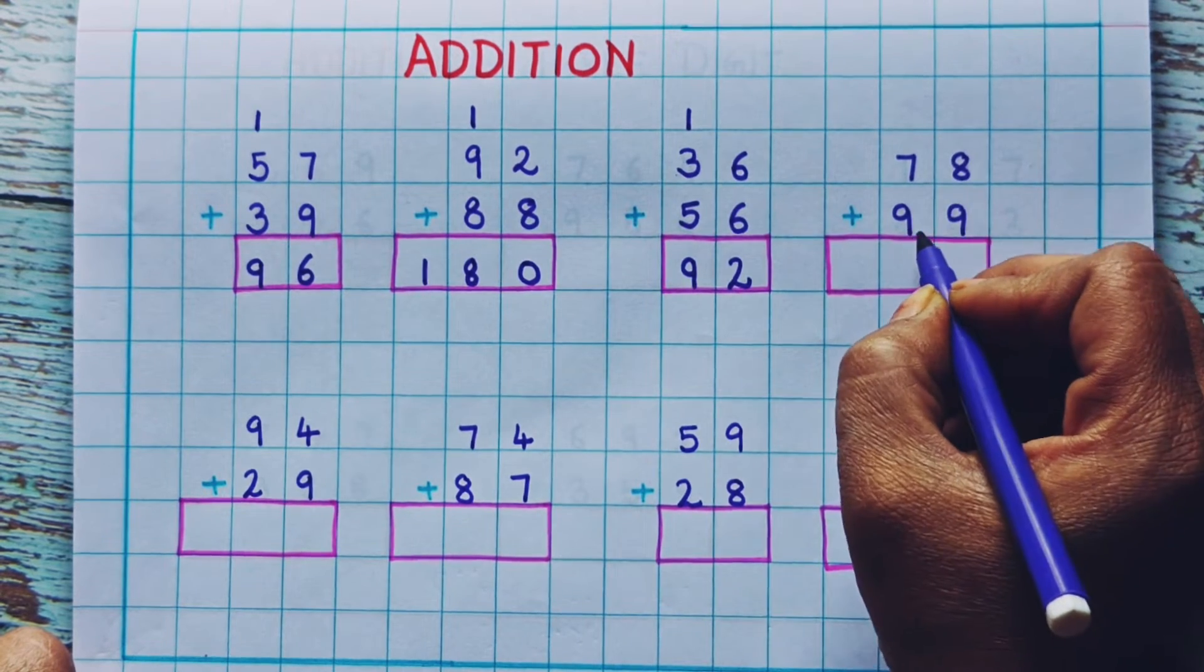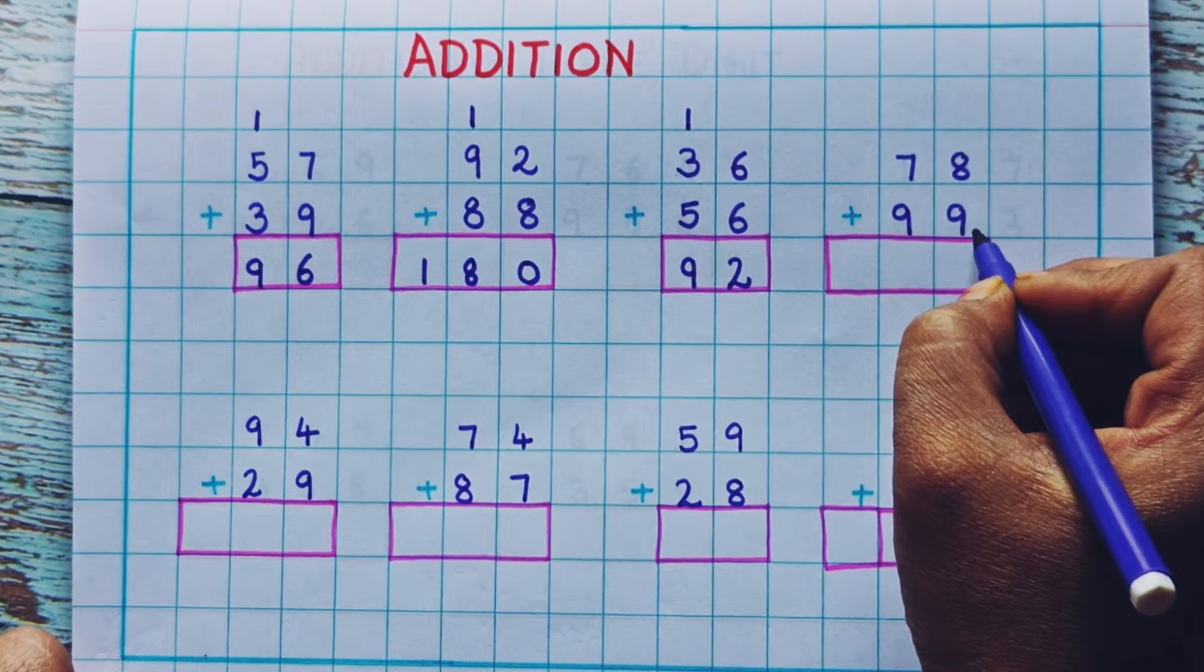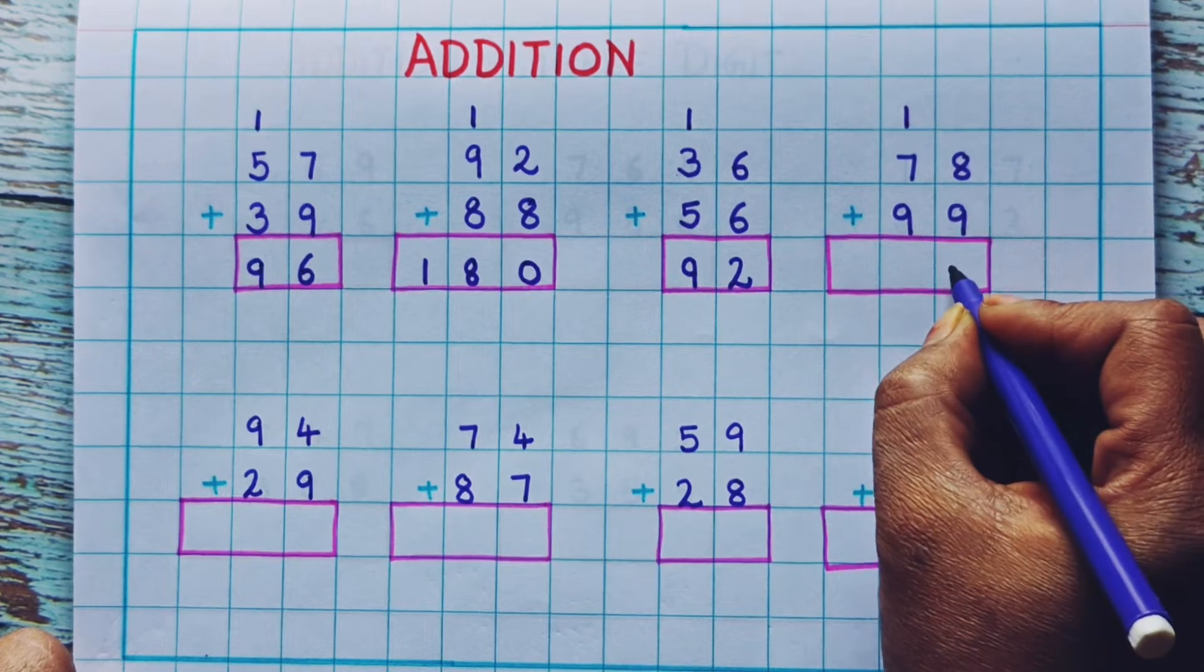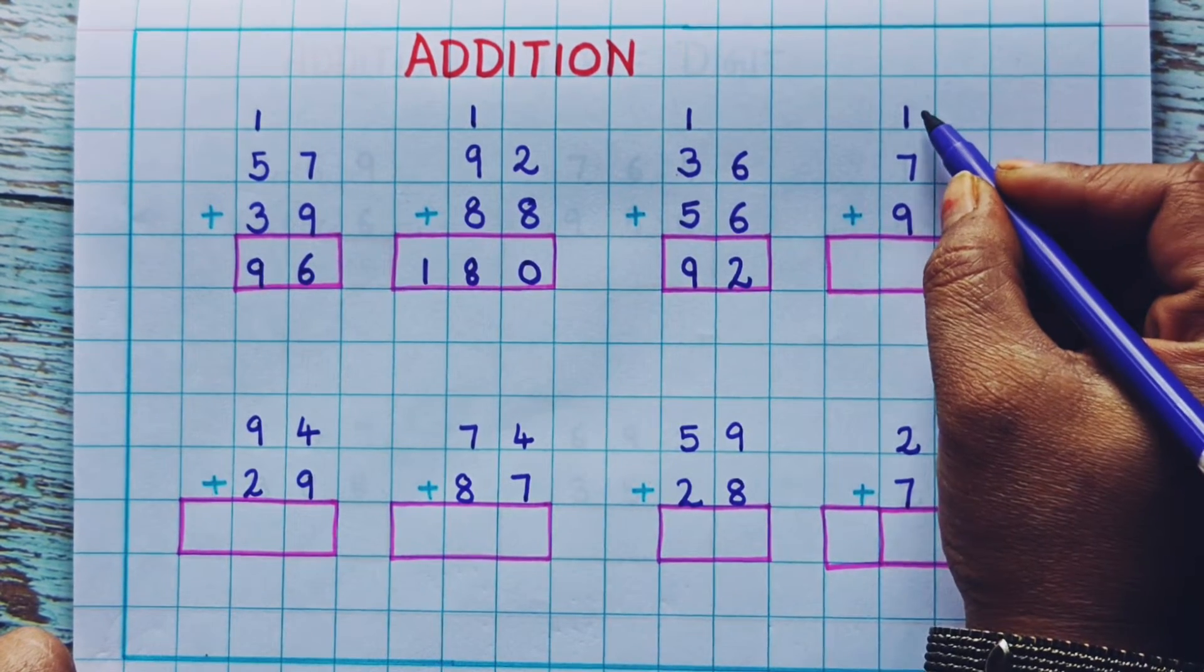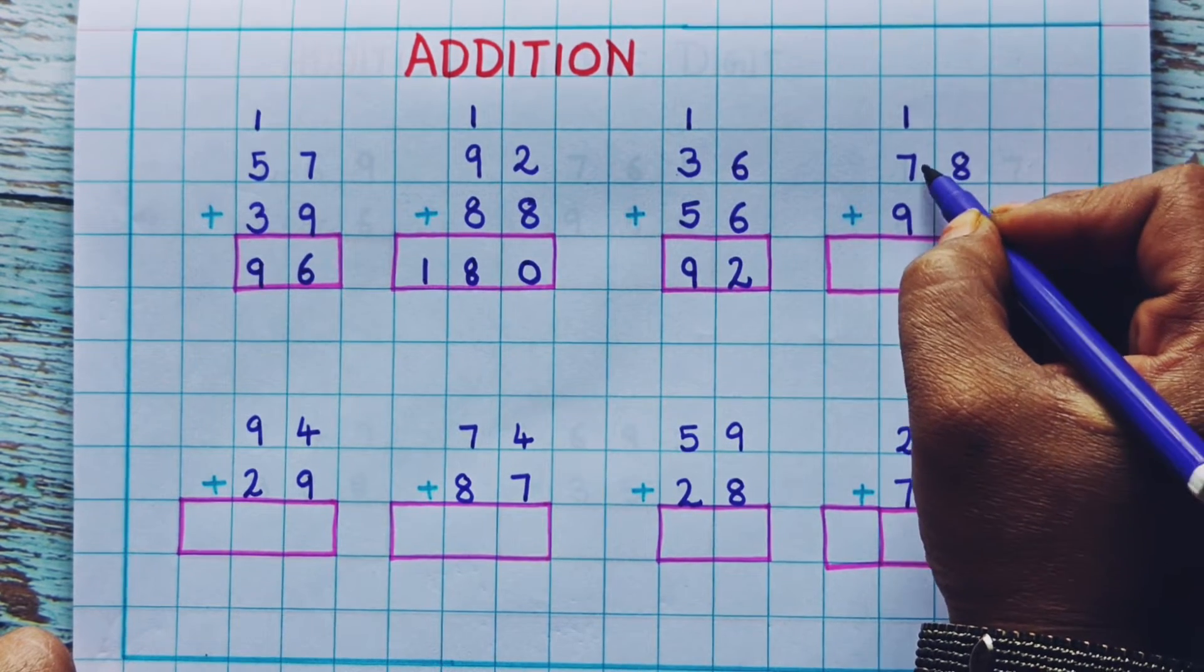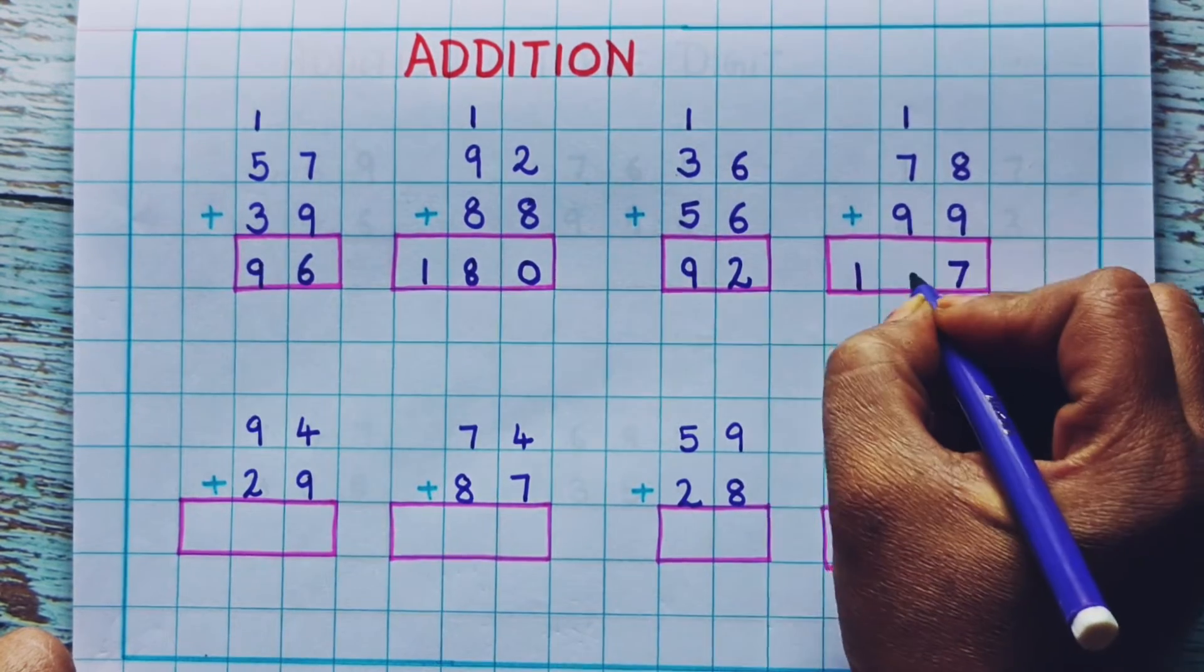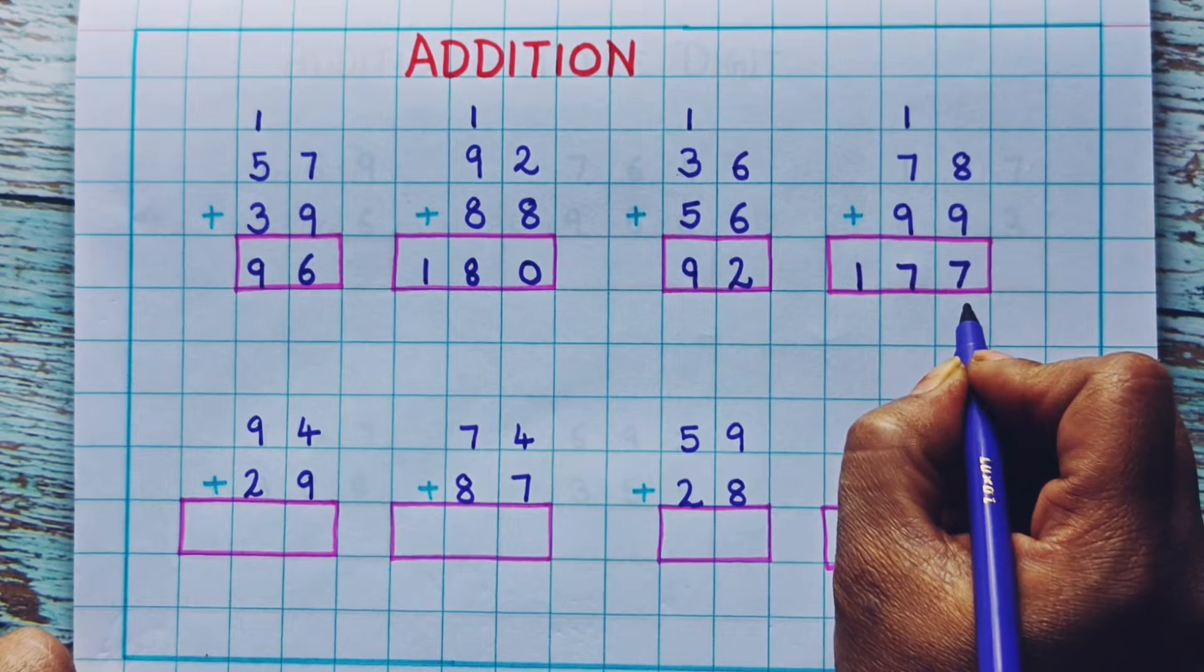78 plus 99. So 8 plus 9. 8 plus 9 is how much? 17. So I will write 1 as a carryover and 7 at the bottom. Now addition of the tens place. 1 plus 7 is 8. 8 plus 9 is again 17. So I will write here 1 and 7. The answer is 177.